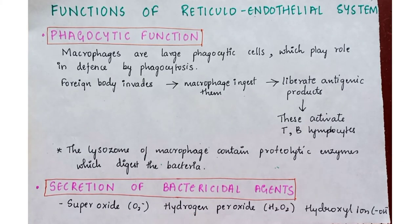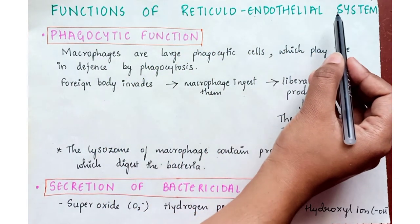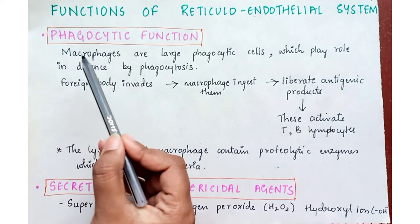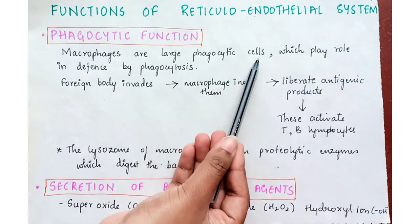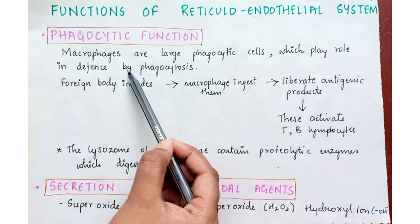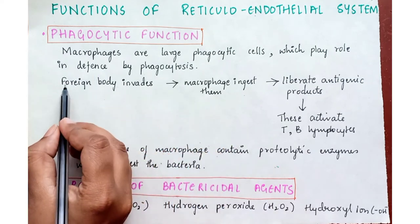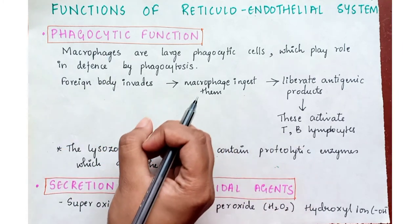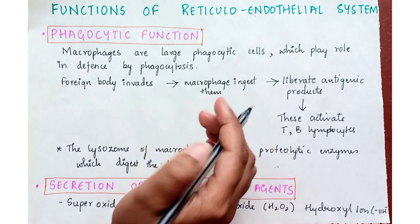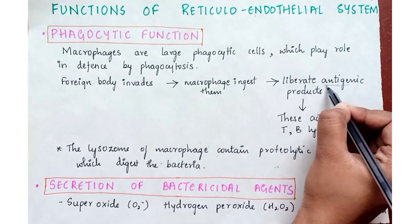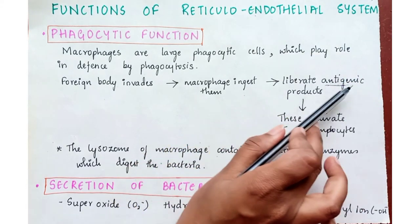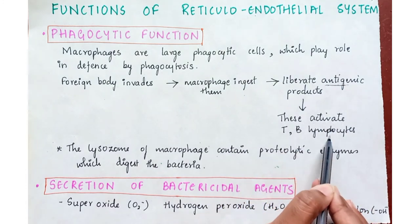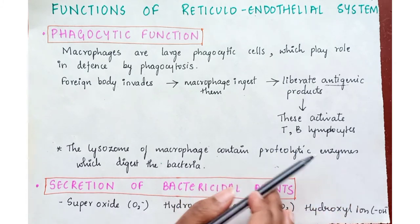The first function of the reticulo-endothelial system is its phagocytic function. Macrophages are large phagocytic cells which play a role in defense by phagocytosis. Once a foreign body invades — like a virus or bacteria — the macrophage engulfs and ingests it, then liberates antigenic products. These antigenic products activate T-lymphocytes and B-lymphocytes in the blood, which help in the defense mechanism.